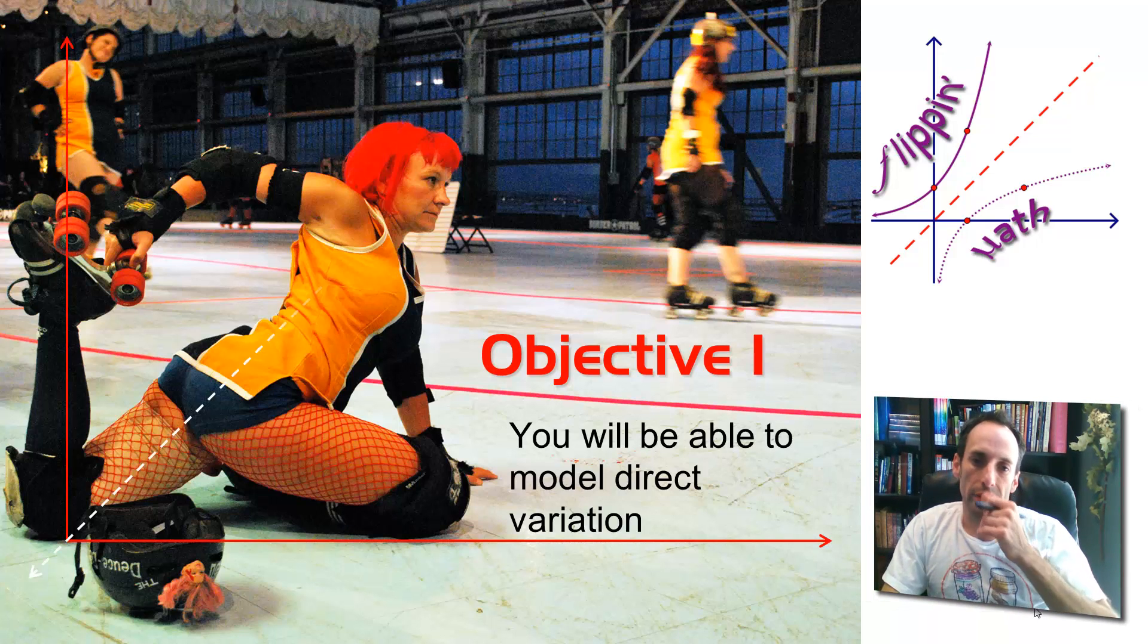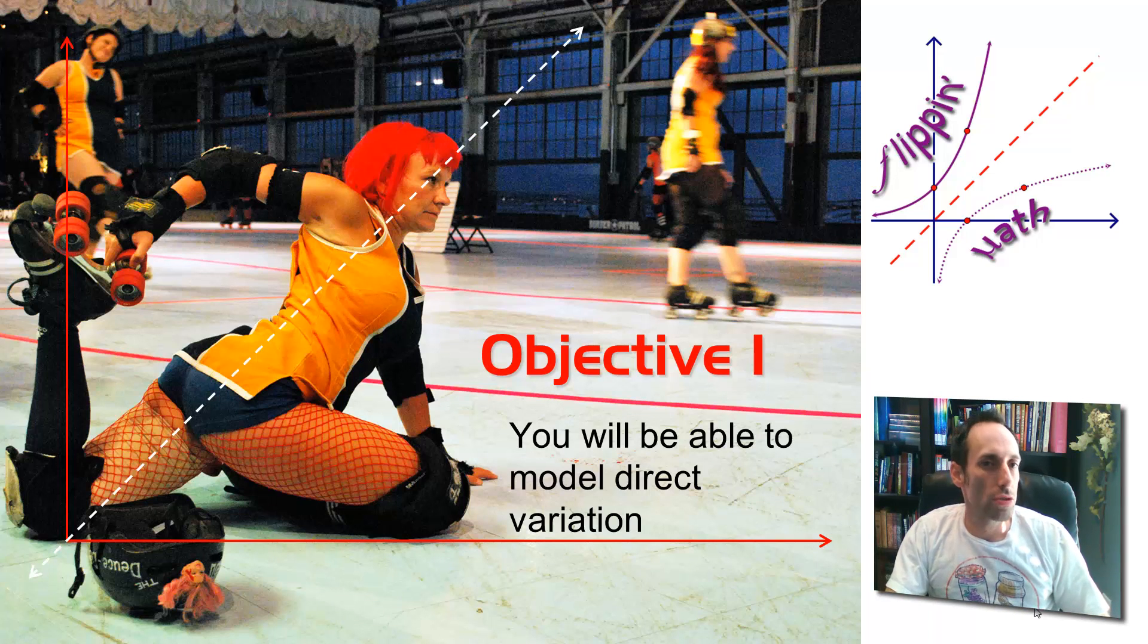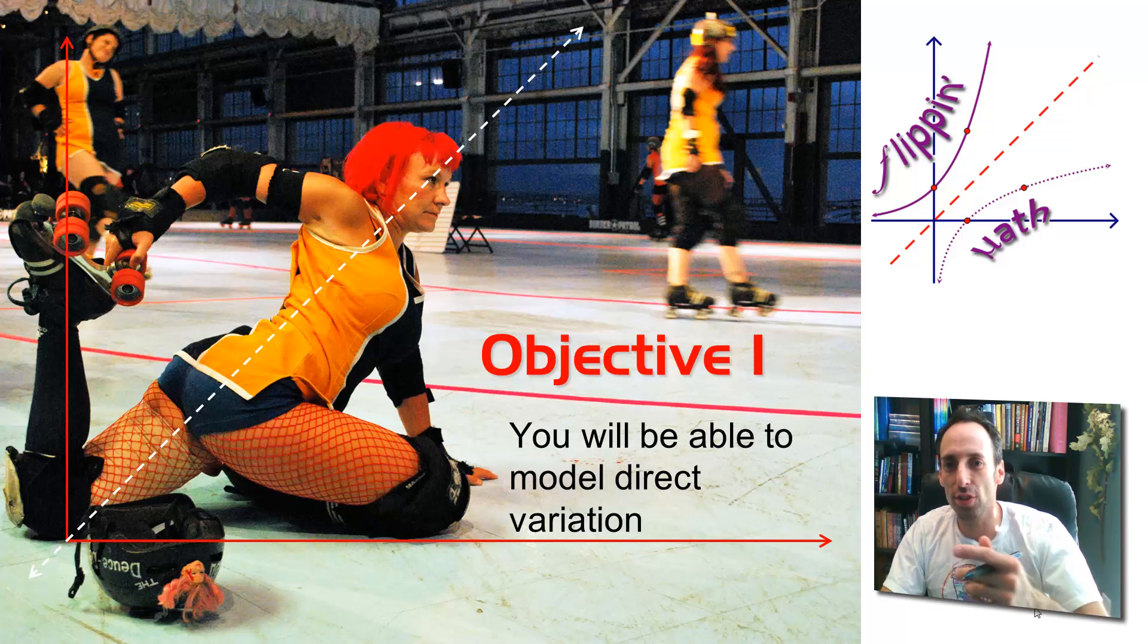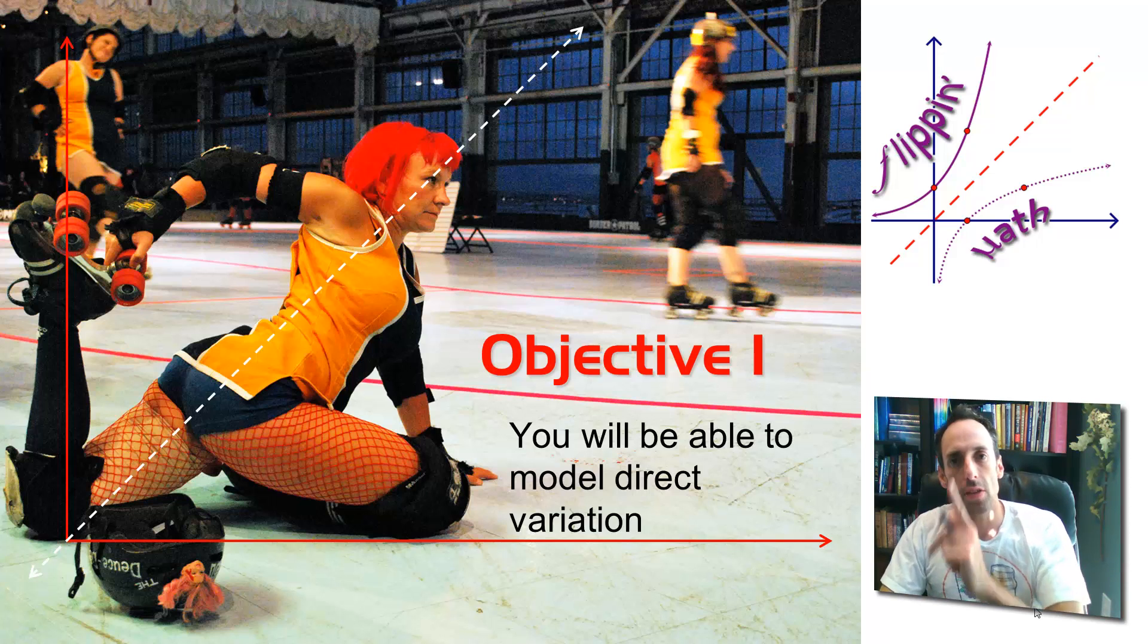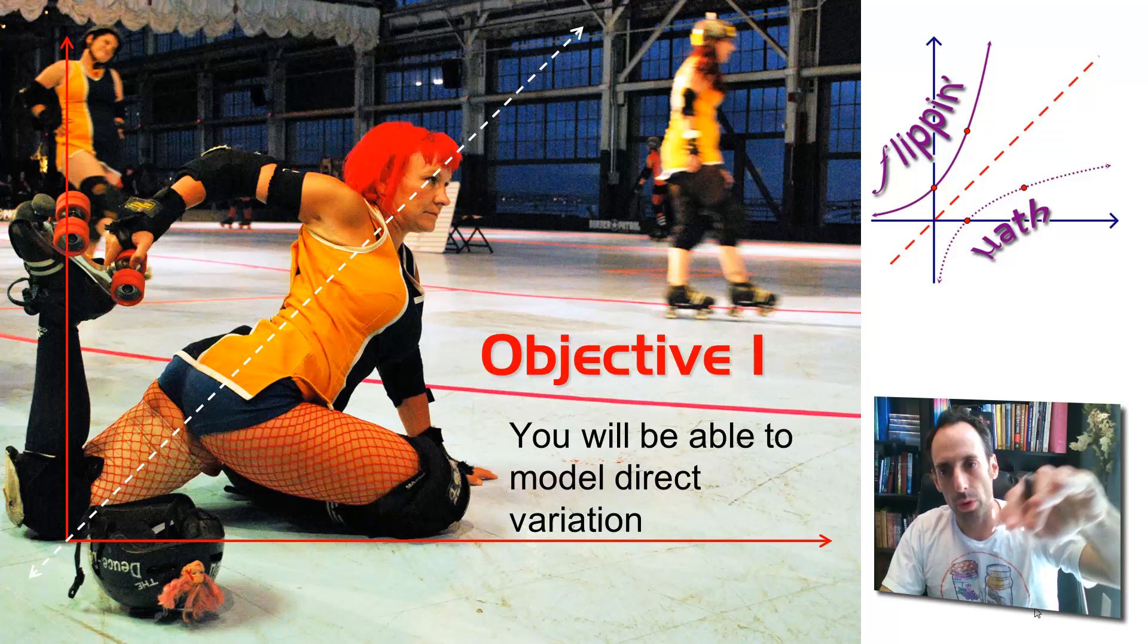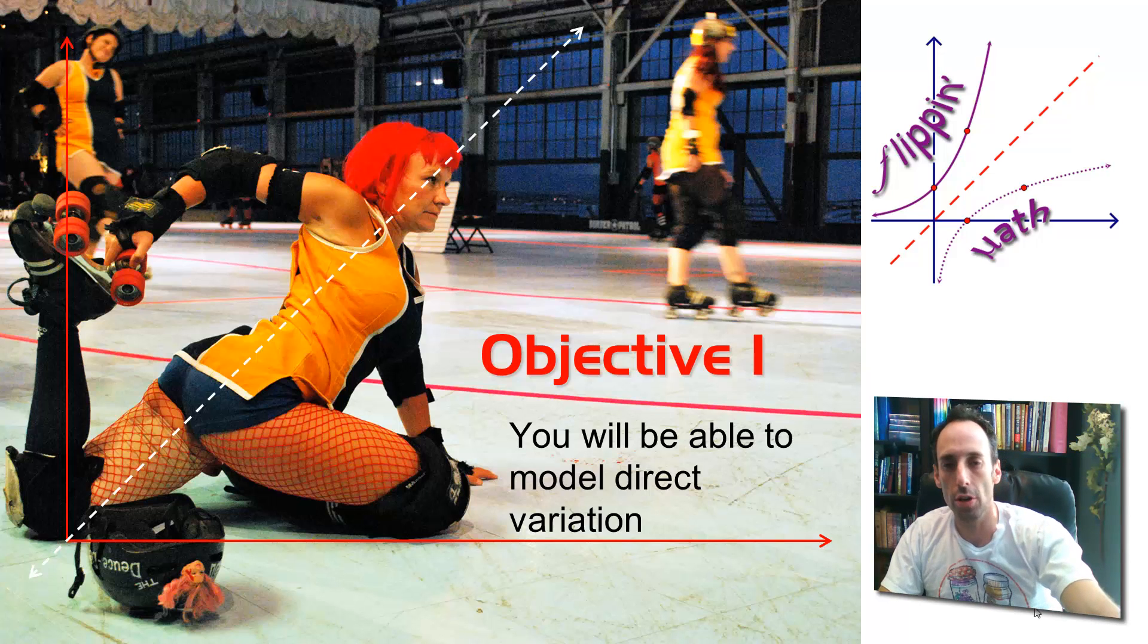Our first objective, you're going to be able to model some direct variation. And I know what you're thinking, what a strange picture this is. So here you've got some roller derby chicks, and this one is stretching right here in the foreground, the one with the orangish-red hair. Her leg is perpendicular to the floor. So the floor and her leg make x and y-axis, and her body, it looks as if it's going through the origin, and it's making a straight line. This is a type of line that is showing direct variation.